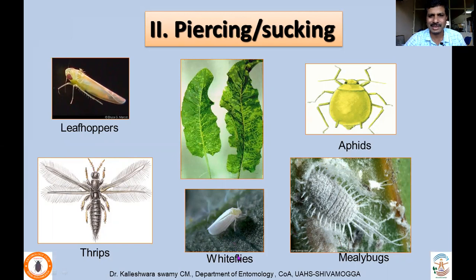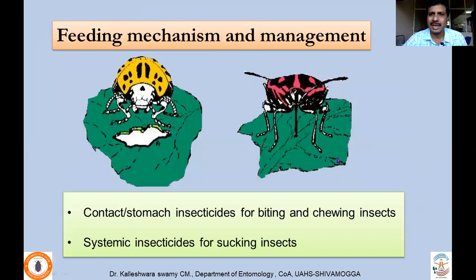Examples include leafhoppers, whiteflies, aphids, and mealybugs — these are all hemipteran insects. Similarly, thrips are thysanopteran insects; they lacerate different parts of the plants and act as piercing and sucking insect groups. Understanding the feeding mechanism is very important in order to design management strategies, as the symptoms pronounced actually depend on the mouthparts of these insects.